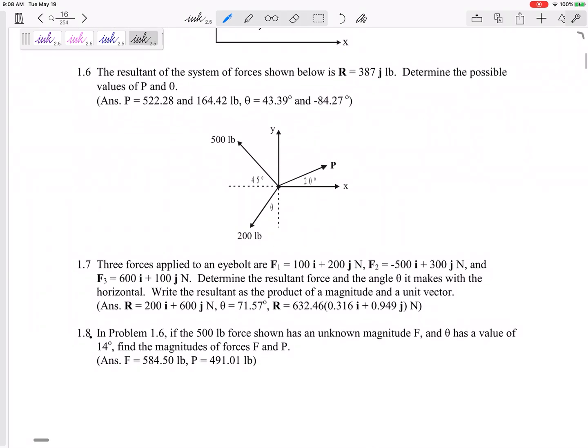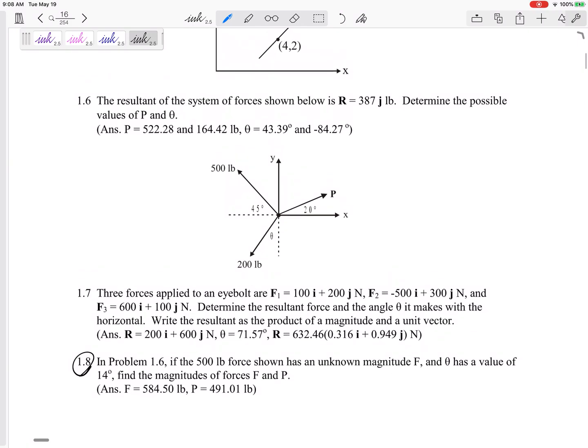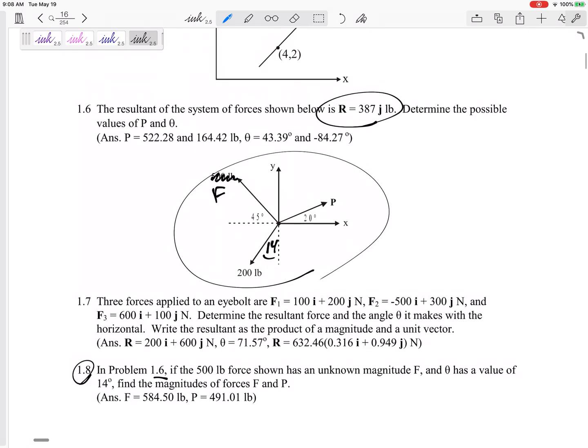And then I want you to do 1.8, which is right here. So 1.8 goes back to problem 1.6. I think it says if the 500 pound force was F and if this was 14 degrees, then solve for F and P. Still, the resultant is a positive 387 J.